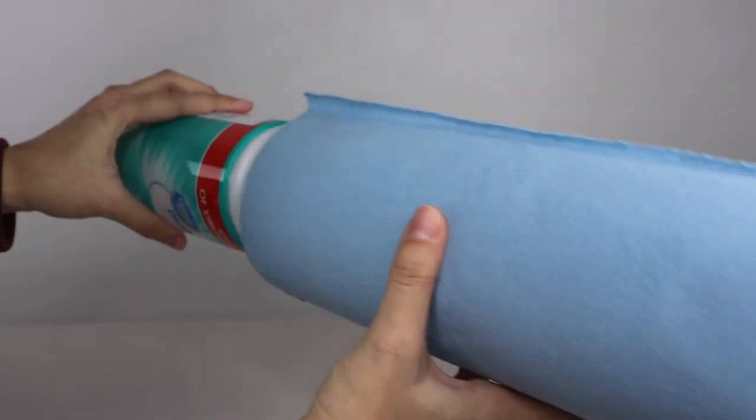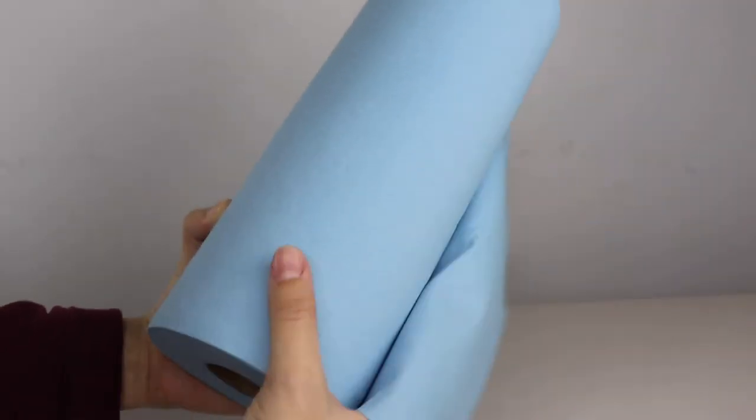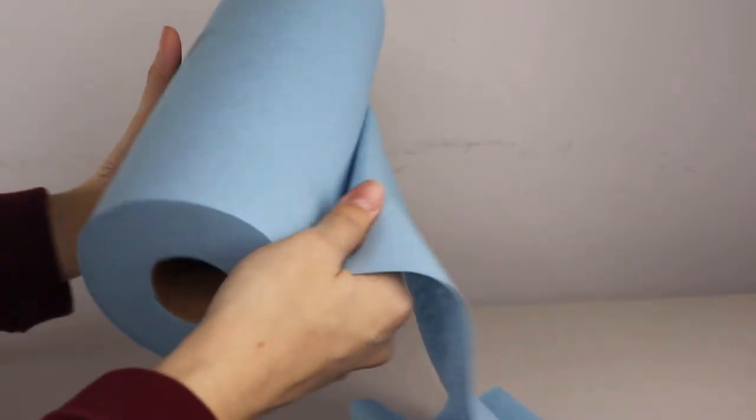And since this paper towel roll is too big to fit into my container, what I'm going to do is unwrap some of the outer layers and wrap them back up and put them in my second container.